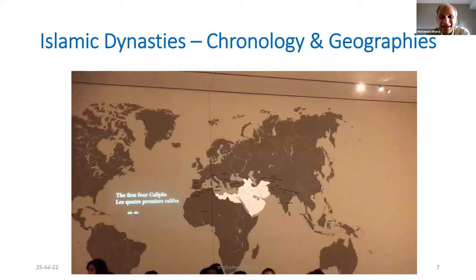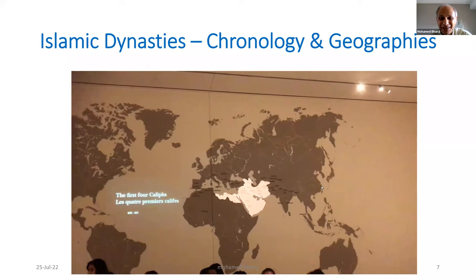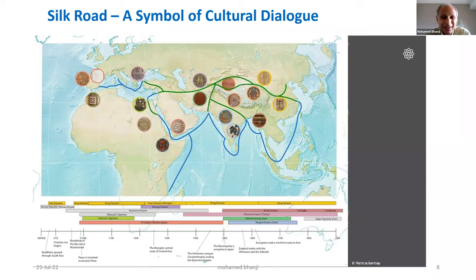When you enter our permanent collection, we have an animated world map showing the name of each dynasty, its time period, and the geographies over which that dynasty ruled. We start with the first four caliphs of the Islamic faith in their geographic area. The map goes through the Abbasid dynasty, the Umayyads, the Fatimids, and so on, giving visitors a sense of the geographic expanse of Muslim dynasties all the way from Spain in the west to China in the east.